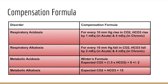For compensation formulas: in respiratory acidosis, for every 10 mmHg rise in CO2, bicarbonate rises by 1 mEq/L in acute and 4 mEq/L in chronic. In respiratory alkalosis, for every 10 mmHg fall in CO2, bicarbonate falls by 2 mEq/L acute and 4 mEq/L chronic. For metabolic acidosis, use Winter's formula: expected CO2 = 1.5 × bicarbonate + 8 ± 2. For metabolic alkalosis: expected CO2 = bicarbonate + 15.